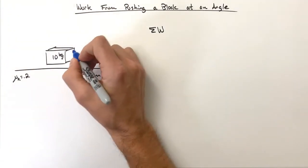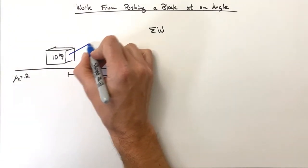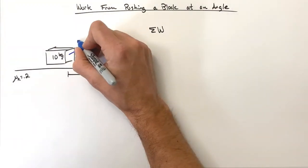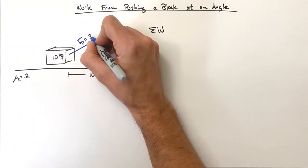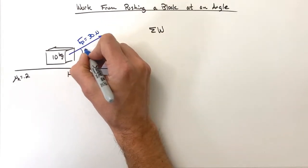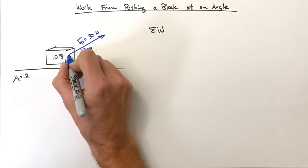The difference between this problem and the last one is this time we're going to pull on this block at an angle. The pull force is going to remain 30 newtons, but we're pulling at an angle of 30 degrees above the horizontal.